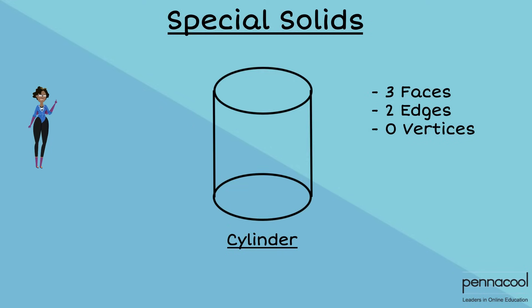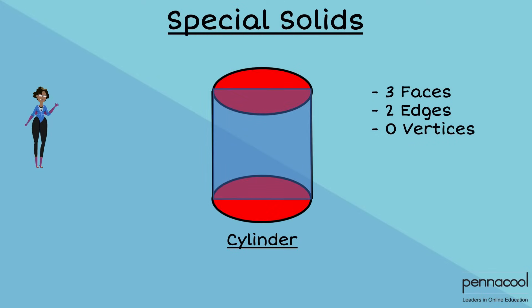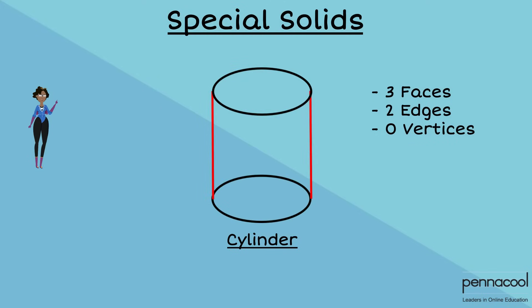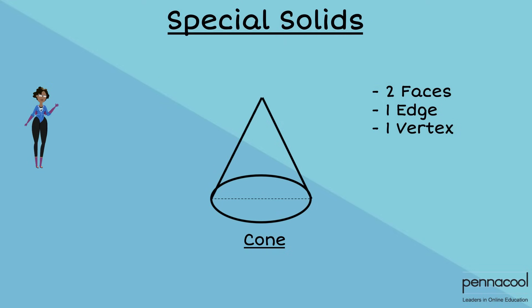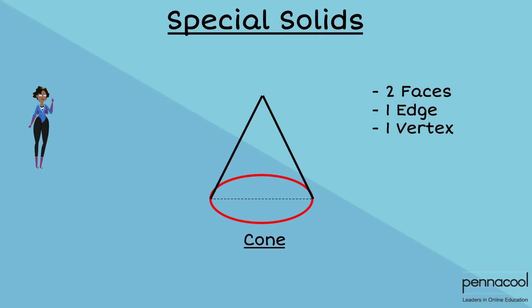A cylinder has three faces, two edges, and no vertices. A cone has two faces, one edge, and one vertex.